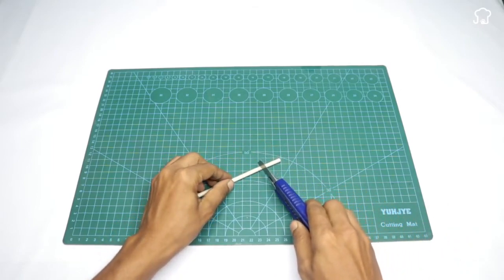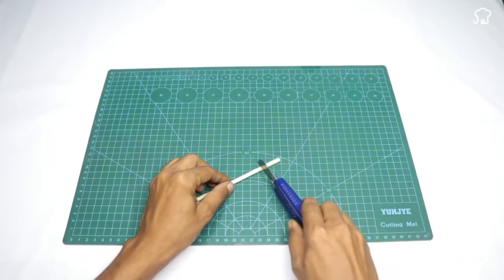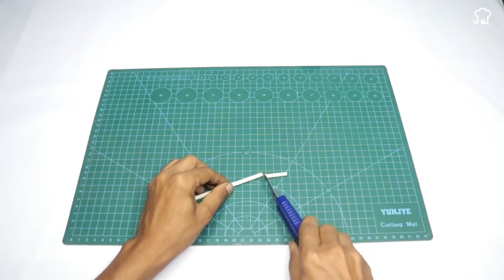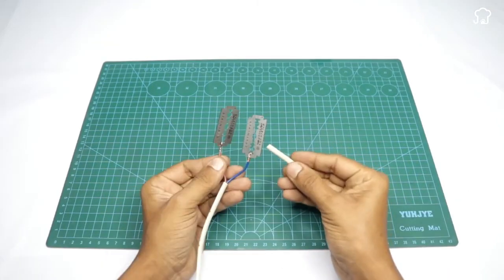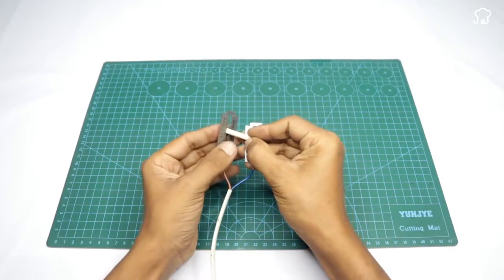Now, you'll need a wooden stick of the right width. Using the cutter, cut a piece about 2 inches long. This will be the key element to connect the blades.